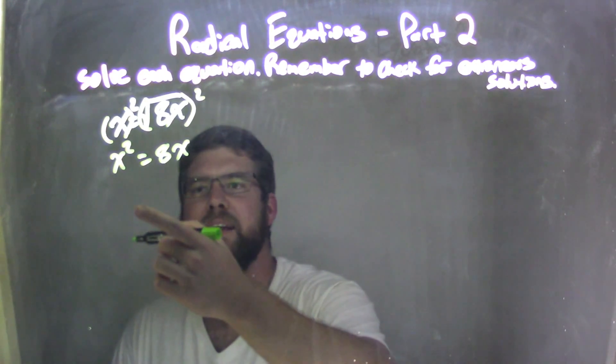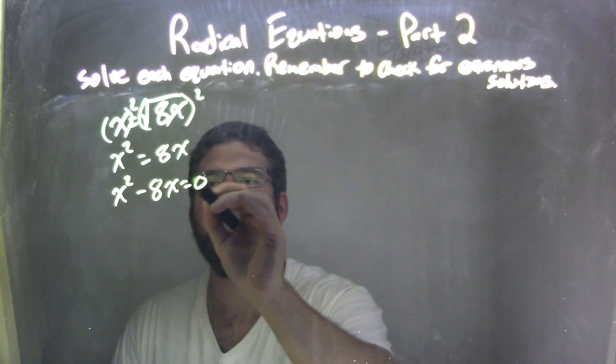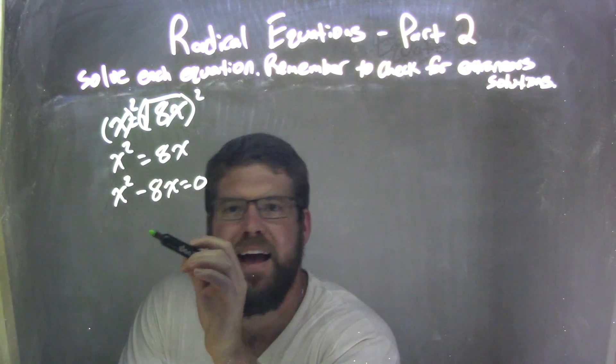From there, I'm going to subtract 8x from both sides, leaving me with x squared minus 8x equals 0. Remember, that's subtracting over. A lot of people just want to divide it. No, subtract that 8x over.